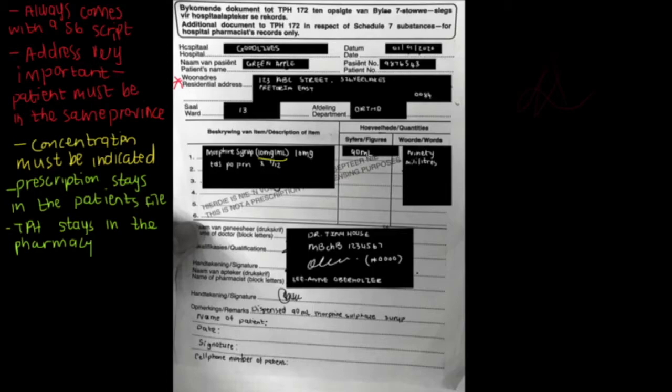So let's quickly look at the information that needs to be on a TPH. It's going to be the name of the hospital, the date that the TPH is written. And that date must be the same as the date of the prescription. The full names of the patient, the patient number or the number of the file. And the patient's address.